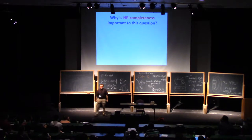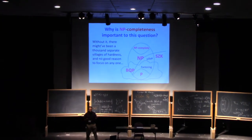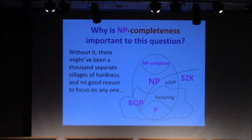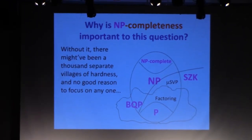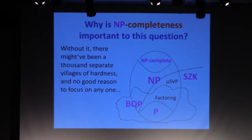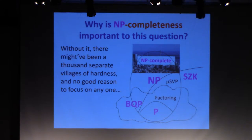The reason NP-completeness is important to this discussion is that if not for NP-completeness, you could have imagined a priori an enormous zoo of different incomparable hard problems, with no interesting general principles to be found. But what NP-completeness says is that there are little isolated villages of hardness, and also this gigantic metropolis of hardness — the NP-complete problems. So it really makes sense, as a first pass, to focus on how high can we get within NP — can we get all the way up to the NP-complete problems?